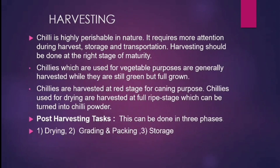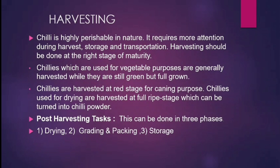Harvesting. Chilli is highly perishable in nature, requiring care during harvest, storage and transportation. Harvesting should be done at the right stage of maturity. Chillies used for vegetable purpose are generally harvested while still green but full grown. Chillies are harvested at the right stage for canning purpose. Chillies used for drying are harvested at full ripe stage and can be turned into chilli powder. Post-harvesting tasks can be done in three phases: drying, grading and packing, and storage.